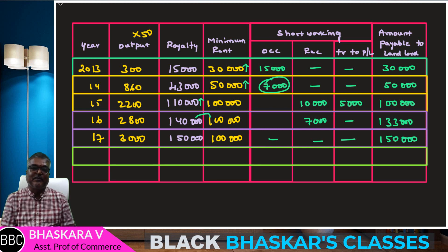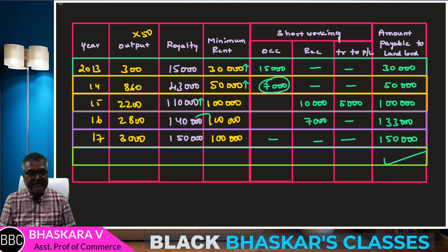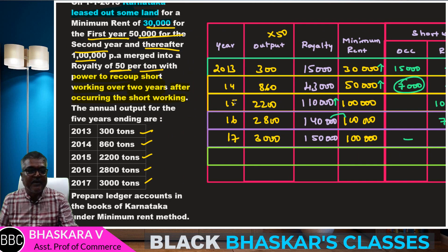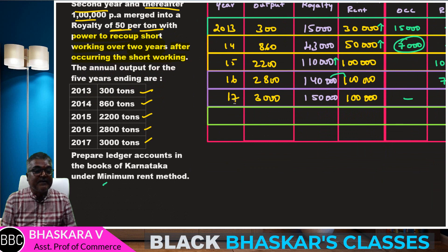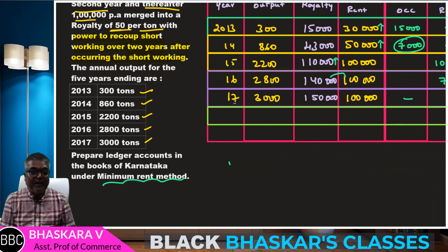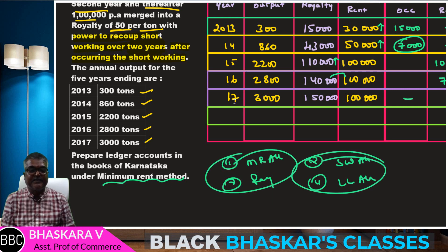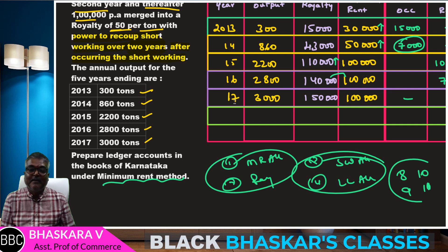1 lakh — this is the analysis table or analysis table of the problem. Section C problem with minimum rent method. The problem requires: minimum rent account, then royalty account, short working account, and landlord account — prepare.